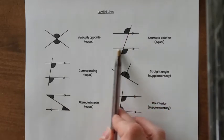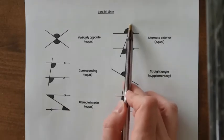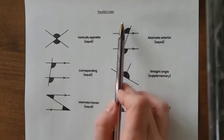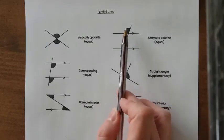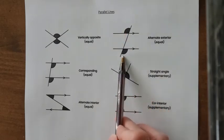This one I also consider a Z pattern, except we're looking at the outside, the exterior angles. So the alternate exterior angles are equal. So again, if that one is 120, this one will be 120.